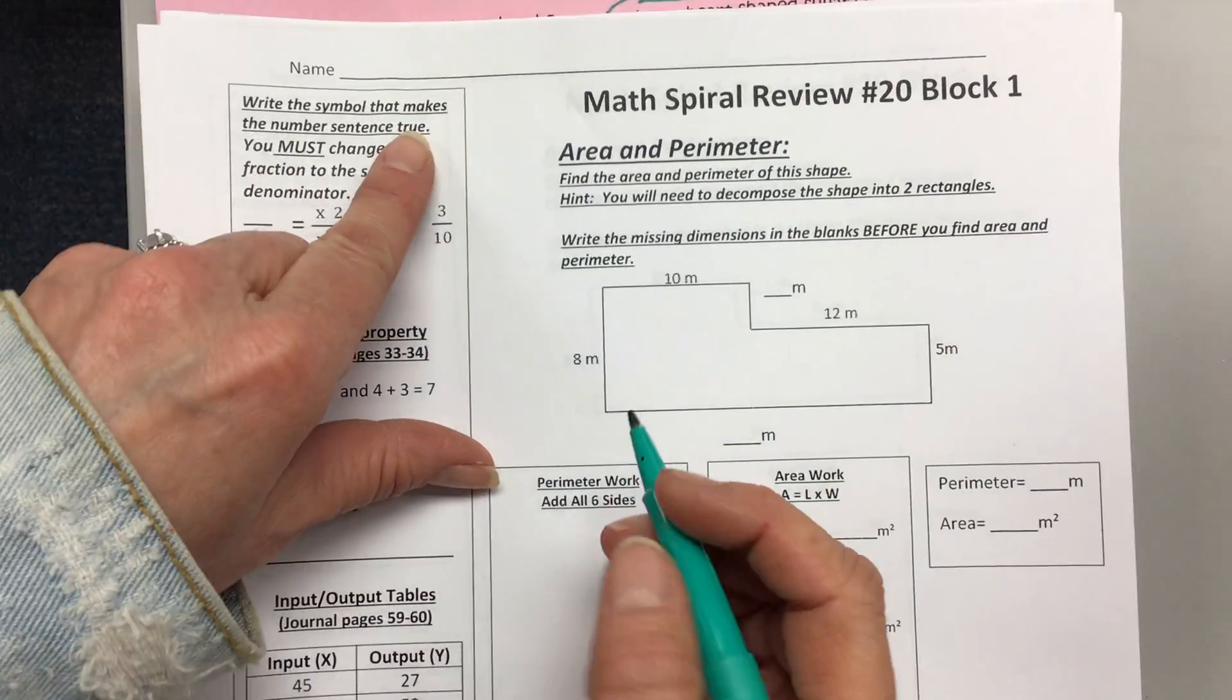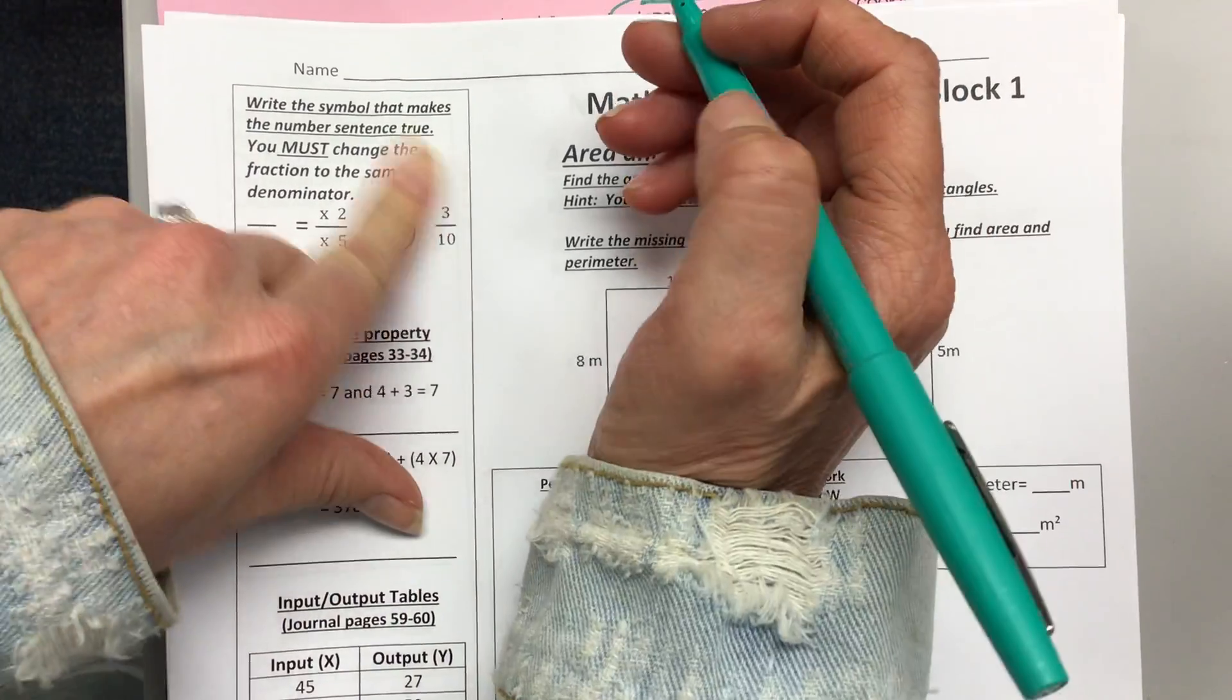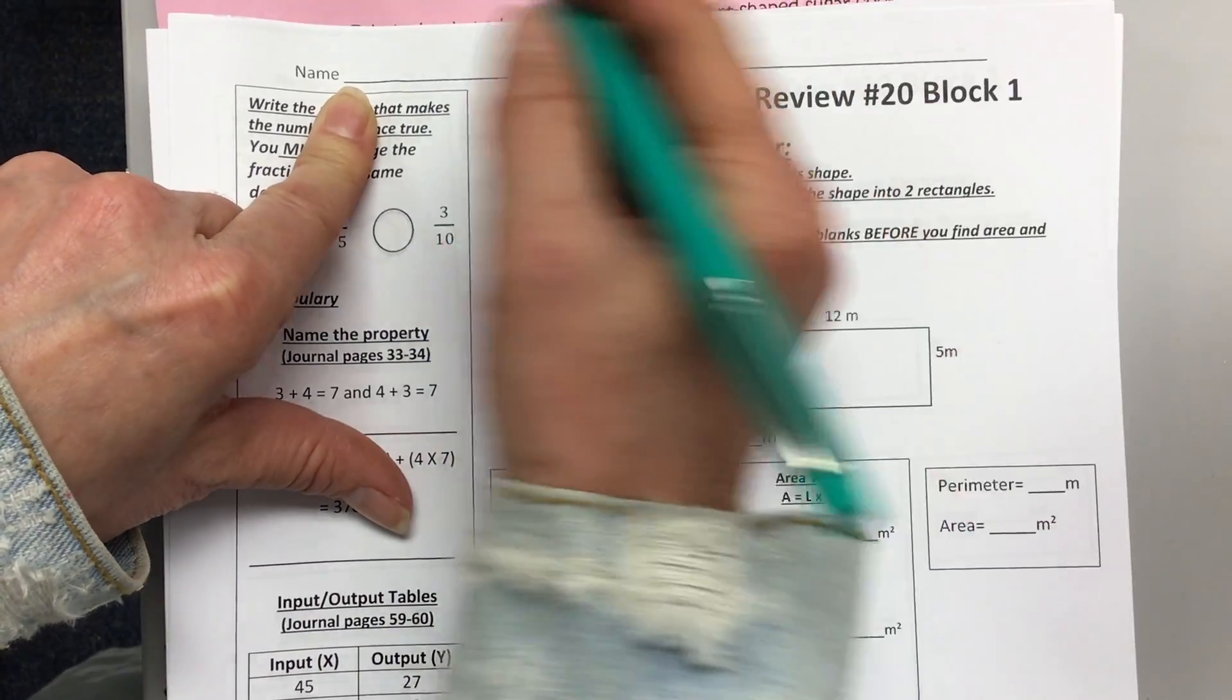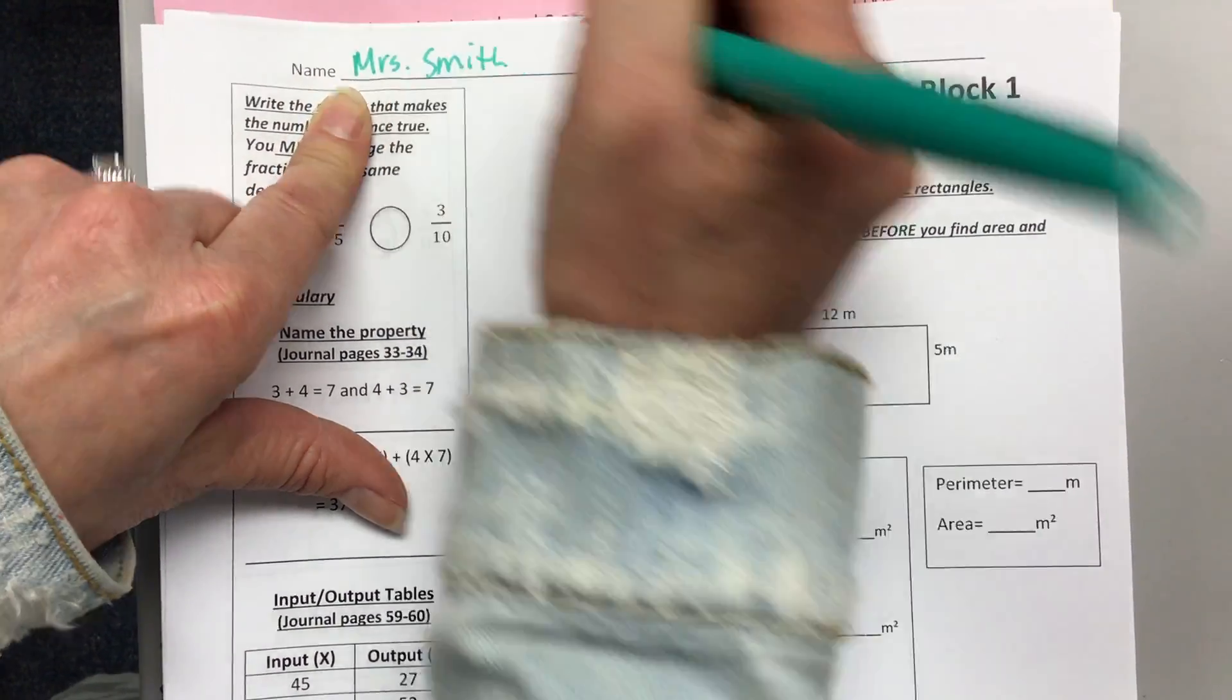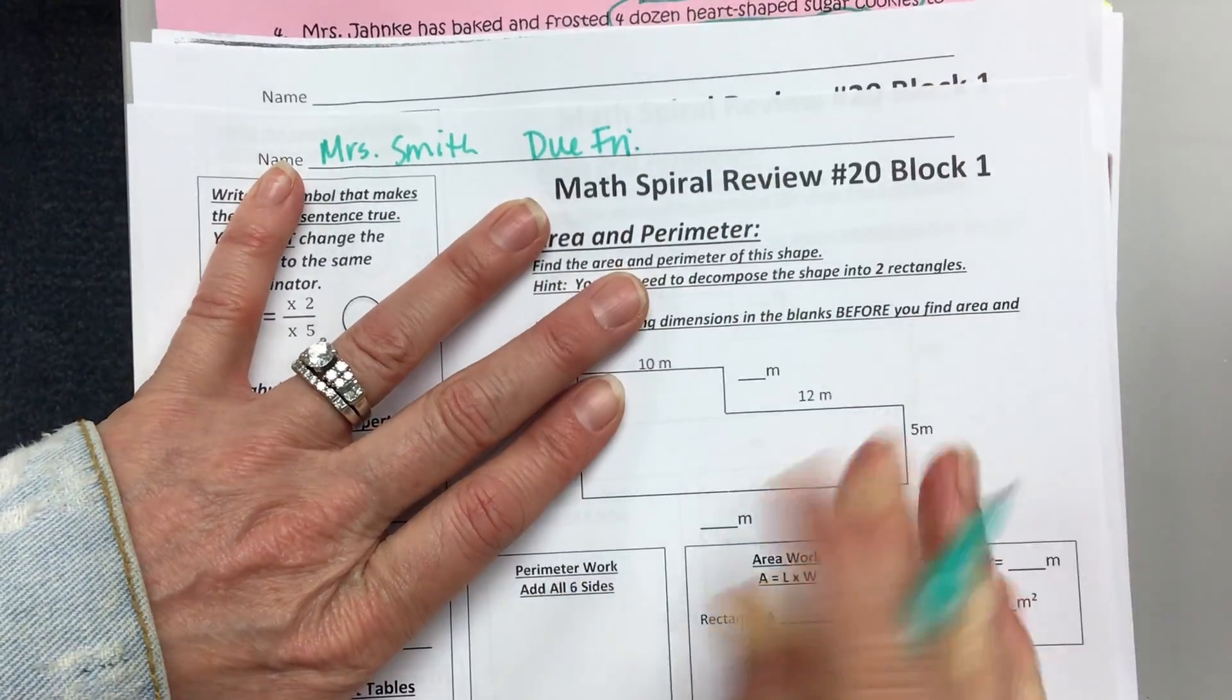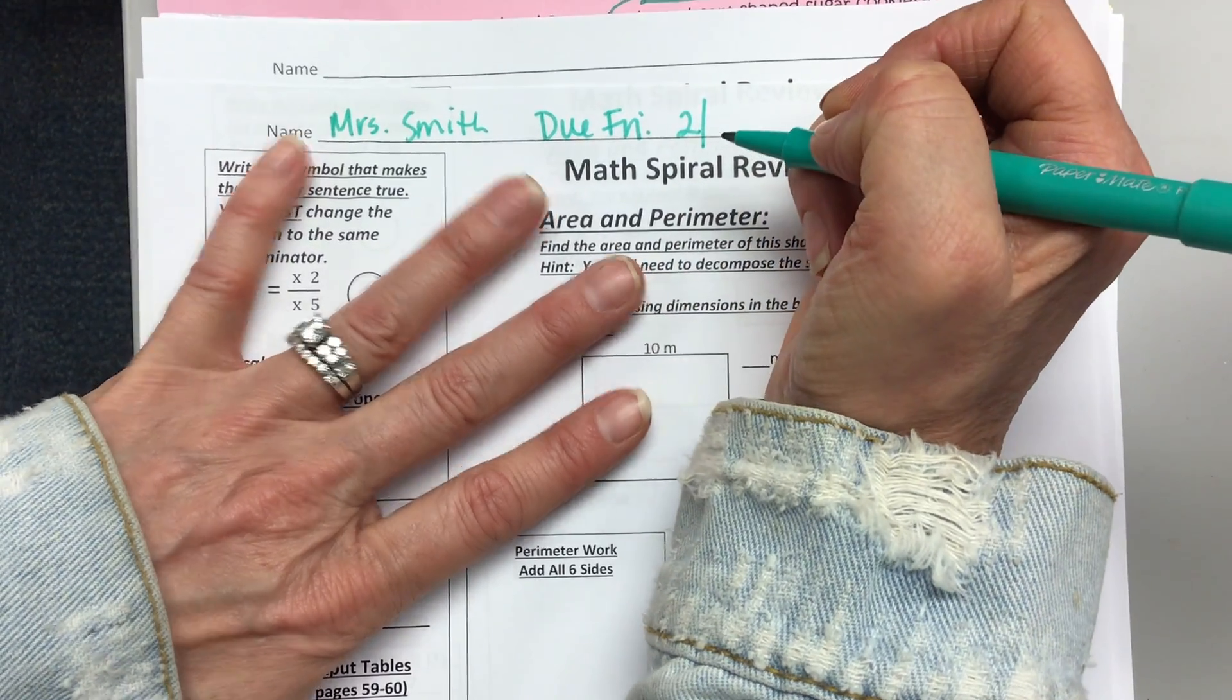Good morning. Today is our Super Tuesday 2-22-22. This is block one math and we're going over our math spiral review number 20. I'm going to put my name at the top. You should put your name, and that this is due this Friday, and that date is 2-25.